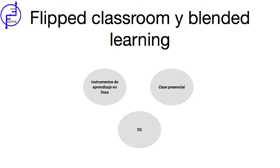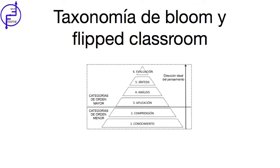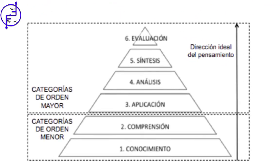El blended learning o aprendizaje mixto, online y presencial, puede favorecer la Flip Classroom. El blended learning utiliza las TIC para lograr una mayor eficacia en el proceso de enseñanza-aprendizaje, combinándolas con la formación presencial. Este modelo de aprendizaje, además, trabaja los elementos que forman parte de la dimensión cognitiva de la taxonomía de Bloom. Los objetivos que se alcanzan en el aula son las dimensiones de orden superior como evaluación, síntesis, análisis y aplicación, mientras que las dimensiones de orden menor, comprensión y conocimiento, quedarían relegadas a la tarea a realizar de manera autónoma por parte del alumno.